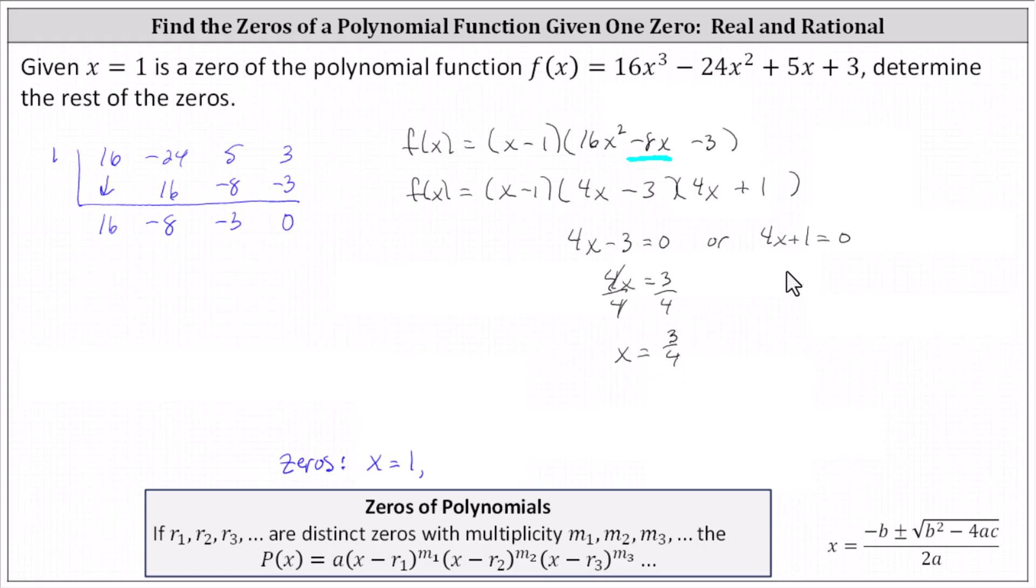And for the second equation, we subtract one on both sides and divide by four. We have a zero of x equals negative one fourth.